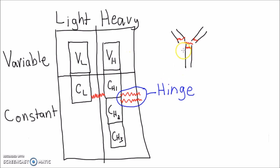Four regions, VL, CL, VH, and CH1, make up the fragment of antigen binding, or Fab.